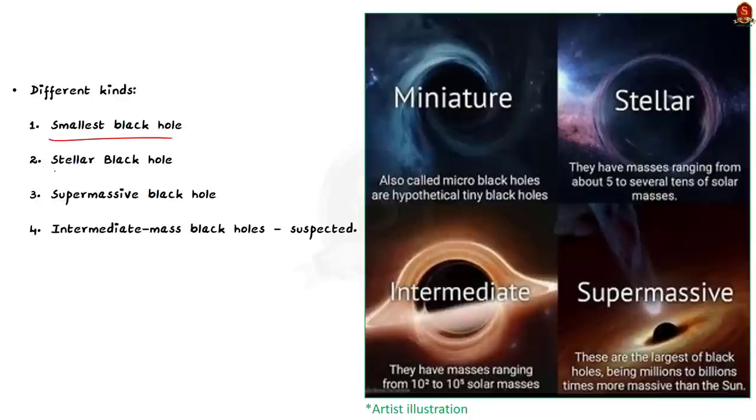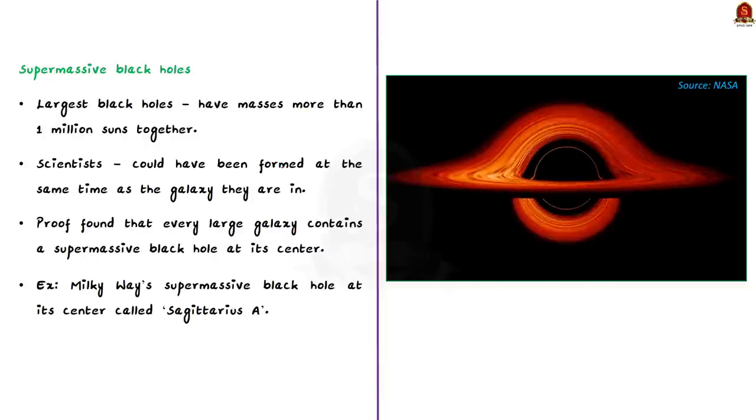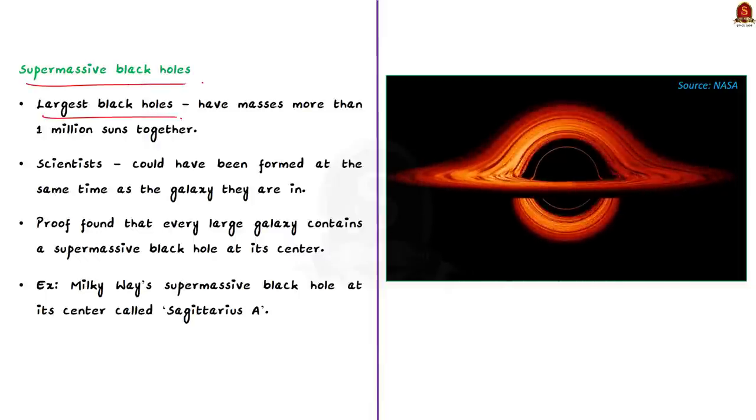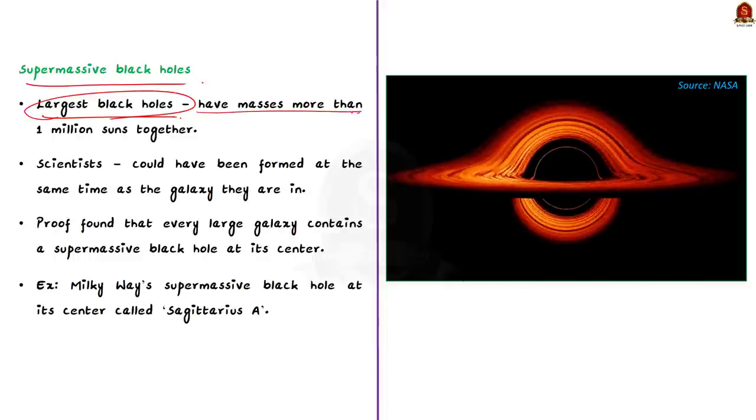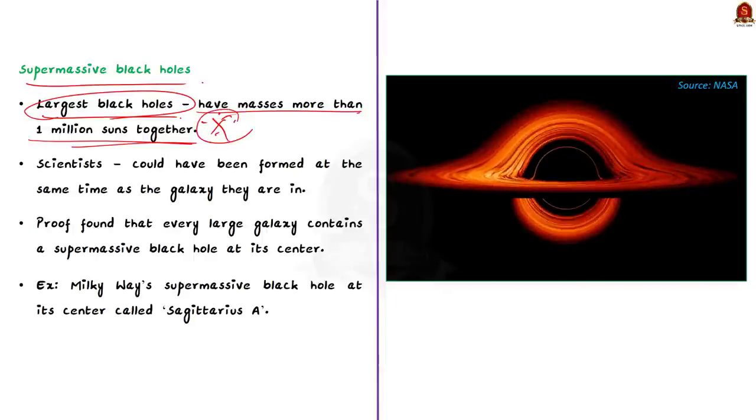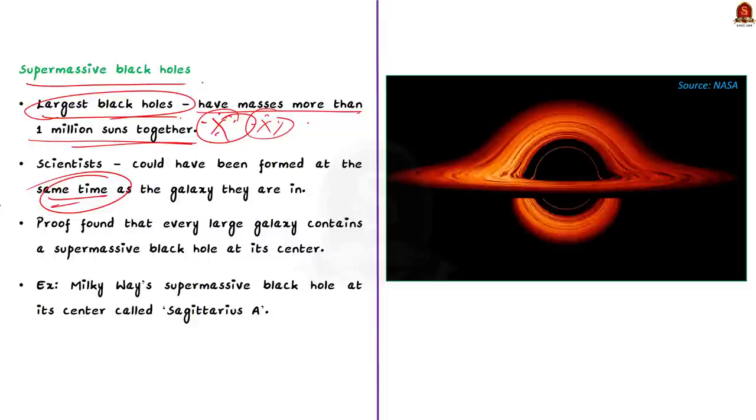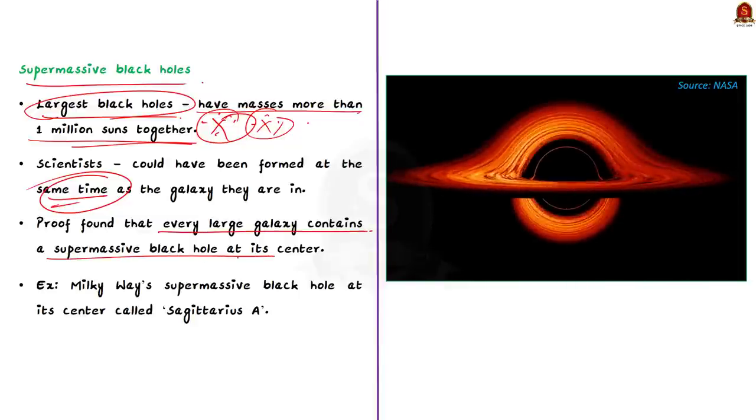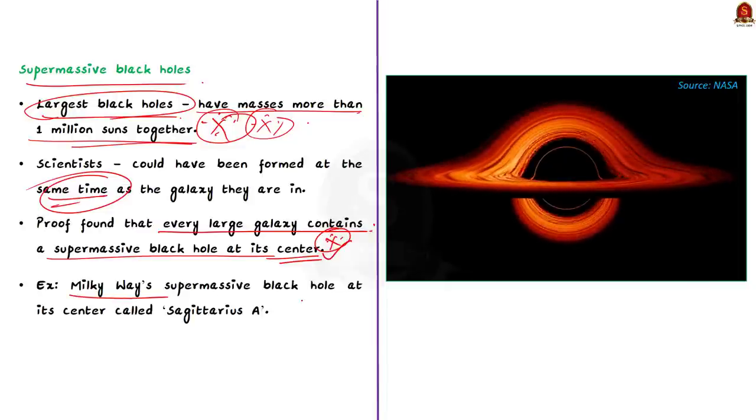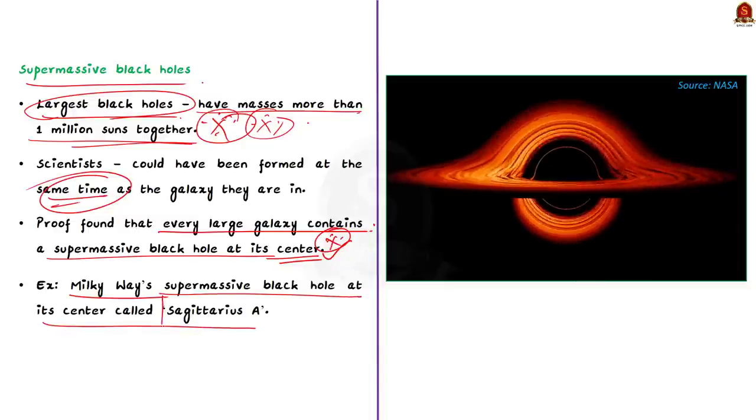Just know that, based on its size and mass, these black holes are of different kinds. There are three major kinds: the smallest black holes, the stellar black holes, and the supermassive black holes. Apart from this, astronomers also suspect an in-between class called intermediate mass black holes. But here, our focus is on the third type, which is supermassive black holes, because the black hole mentioned in the news is a supermassive one. These are the largest black holes. Massive in the sense that these black holes have masses that are more than 1 million suns together. Scientists think supermassive black holes were made at the same time as that of the galaxy they are in. Scientists also have found proof that every large galaxy contains a supermassive black hole at its center. So even our galaxy, that is Earth's galaxy, which is called the Milky Way galaxy, has a supermassive black hole at its center. It is called as Sagittarius A.